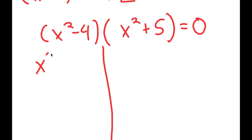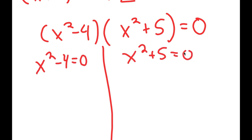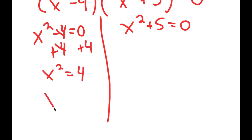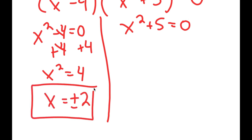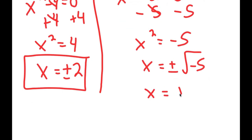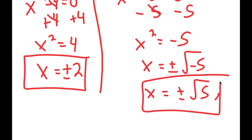This gives me two equations: x squared minus 4 equals 0, and x squared plus 5 equals 0. For x squared minus 4 equals 0, adding 4 on both sides gives x squared equals 4, so x equals positive or negative 2. For x squared plus 5 equals 0, I get x squared equals negative 5, so x equals positive or negative the square root of negative 5, which is positive or negative square root of 5 times i.